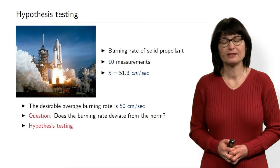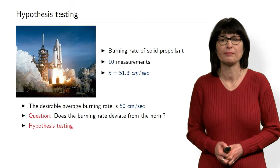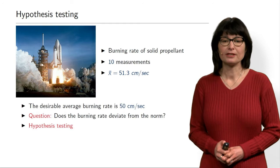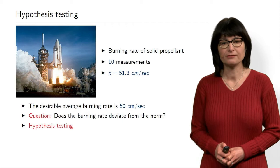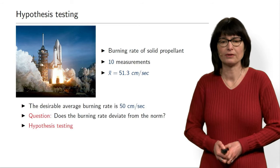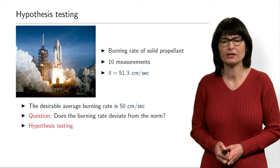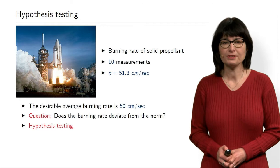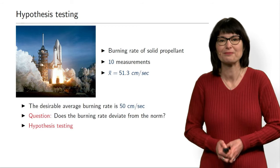First, let's recall what hypothesis testing is about. I will give you an example of one simple test that we already discussed before. We are talking about the burning rate of a solid propellant and we have 10 measurements of this burning rate. We want this burn rate to be 50 cm per second, but we measured on average 51.3 cm per second. What we are interested in is whether this deviation from the desired value of 50 is due to randomness or whether something is wrong with this propellant burning too fast. To answer this kind of question, we developed a statistical procedure called hypothesis testing.